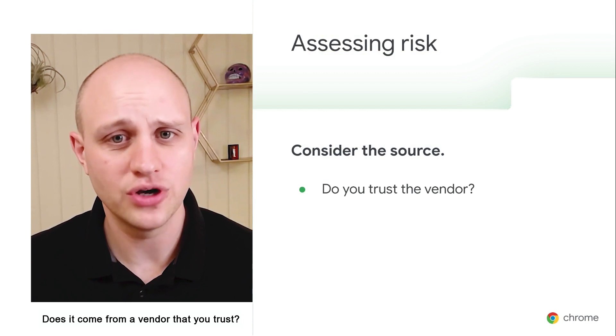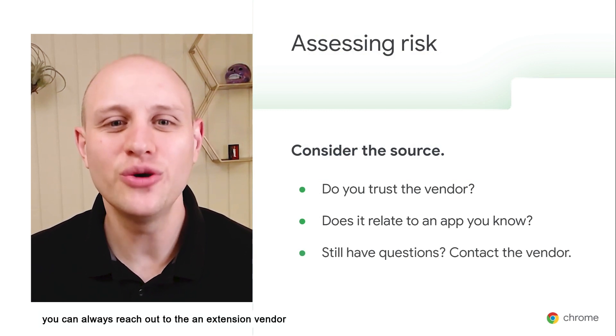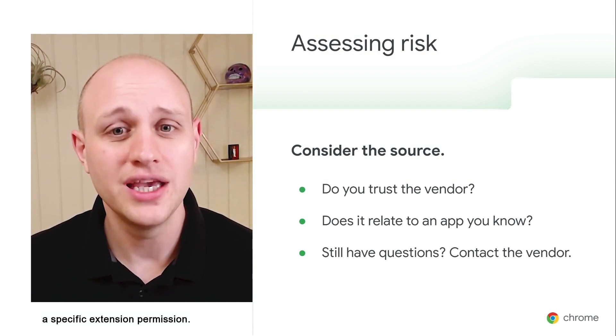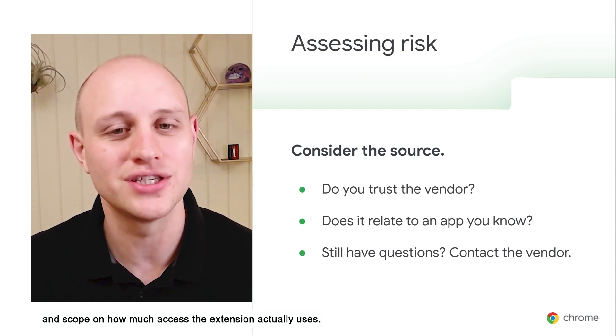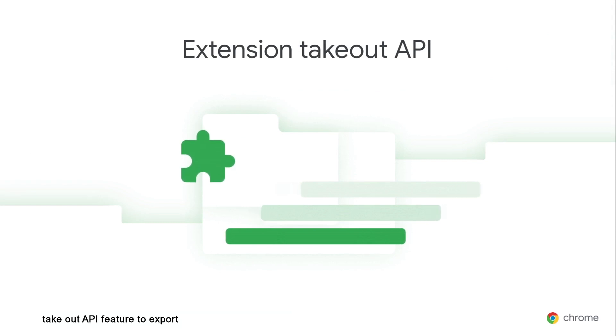When you're trying to evaluate risk, just note that risk is relative — what might be risky for your environment may not be for someone else. Consider the source of the extension first: does it come from a vendor that you trust? Is it related to an application already running in your environment? If you still have questions, you can always reach out to an extension vendor and ask why they're requesting a specific extension permission. Once you have an idea of what permissions or extensions you'd like to block, I'd recommend using the extension takeout API feature to export all the data out to a CSV file.